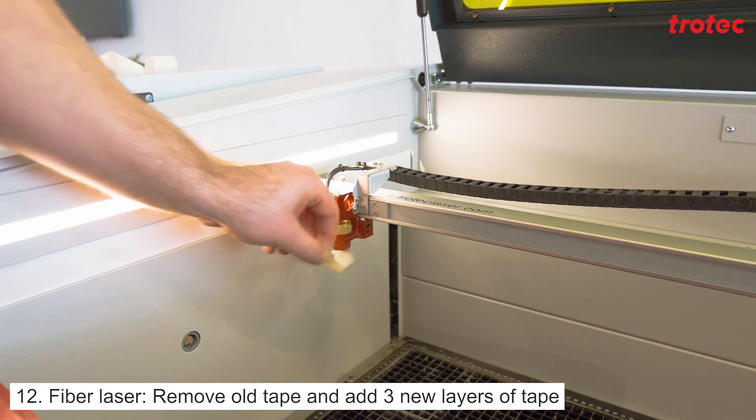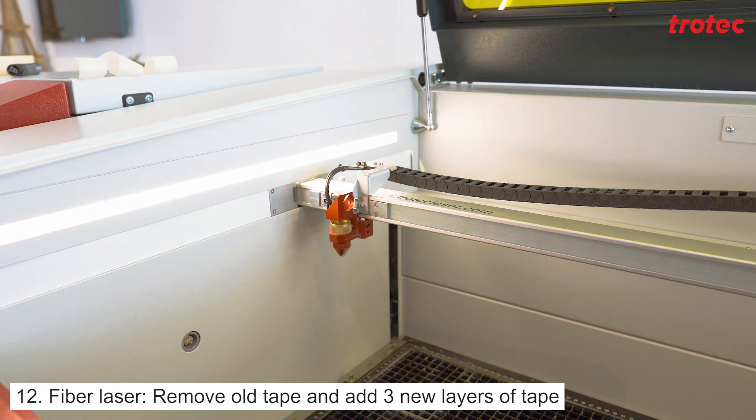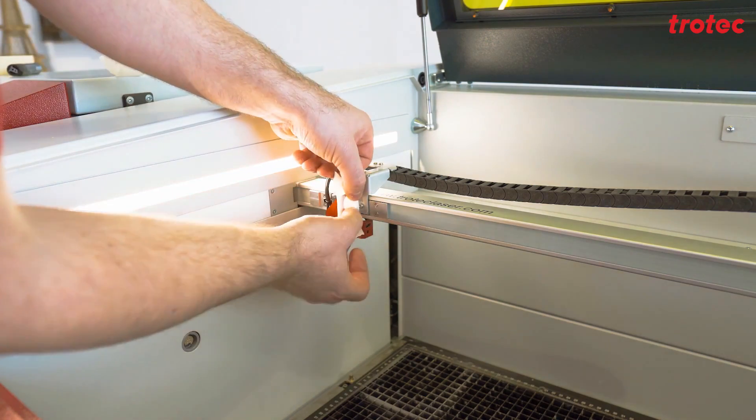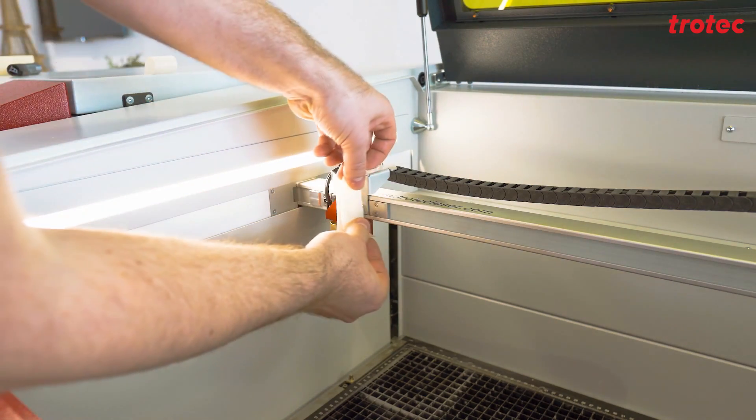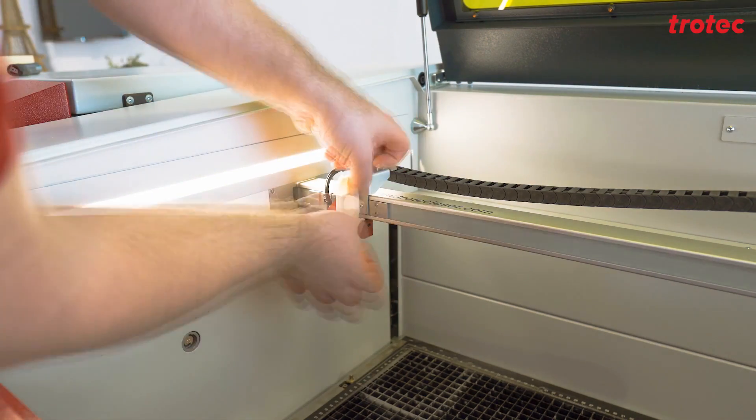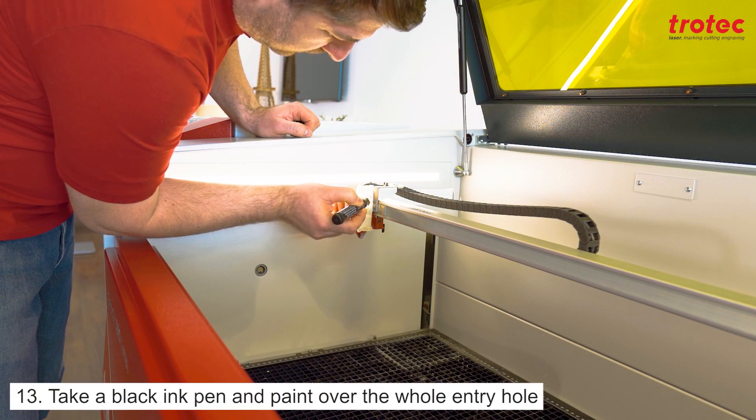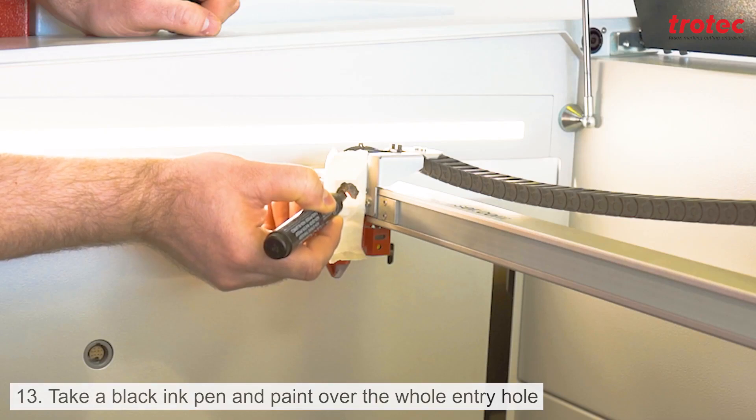For the fiber laser remove the old tape and add three new layers of tape. Take a black ink pen and paint over the entire entry hole.